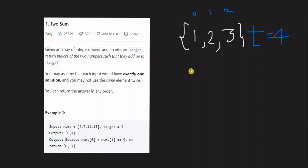The problem name is Two Sum. We are given an integer array of numbers and a target number. We need to find two numbers that add up to the target. We return the indices of those two numbers such that they add up to the target.